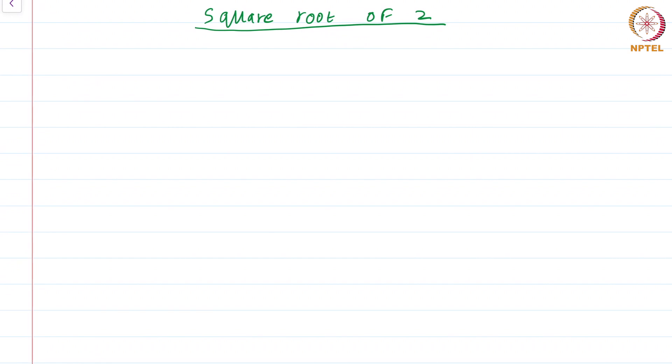In the last module, we had used the fact that the square root of 2 is an irrational number. Let us prove that.